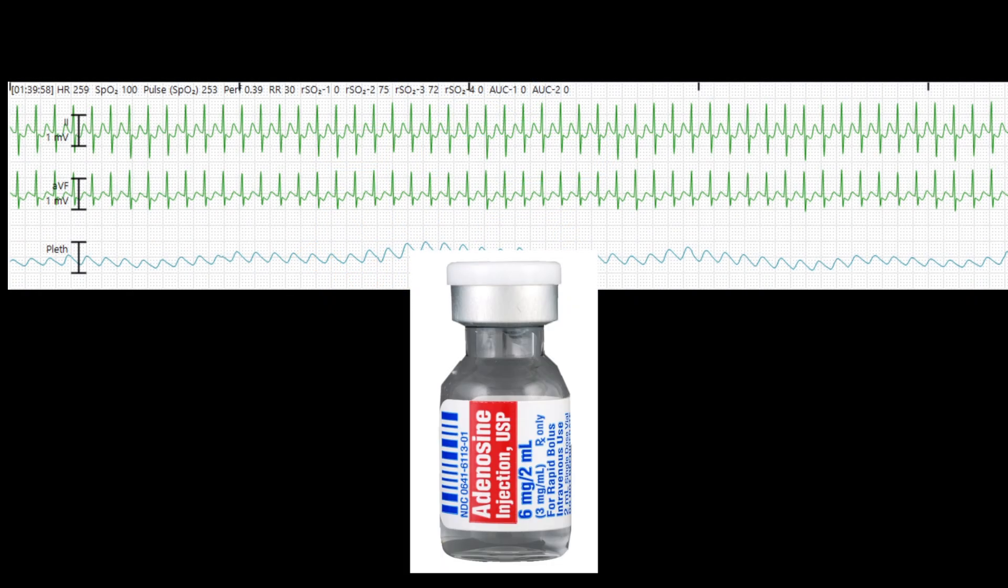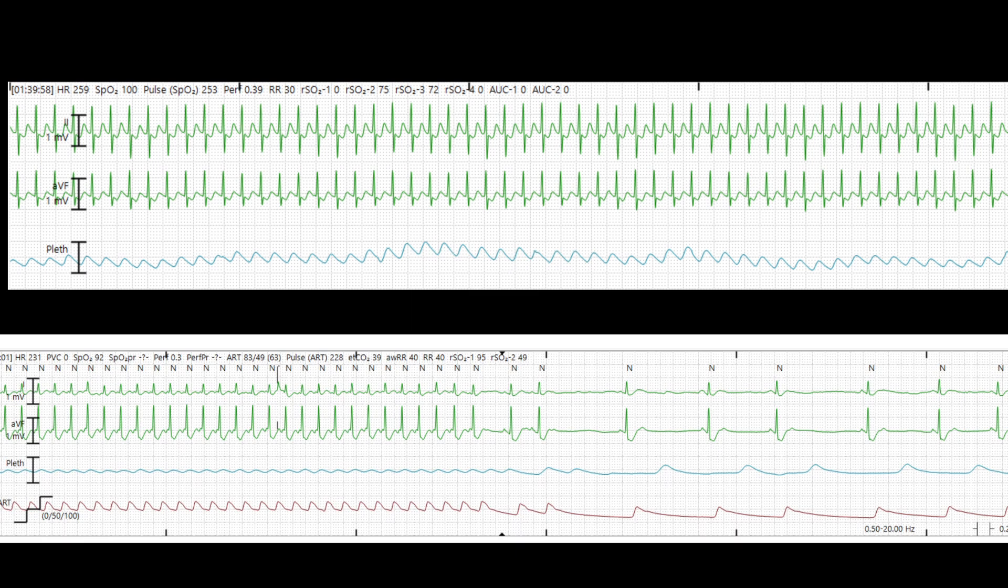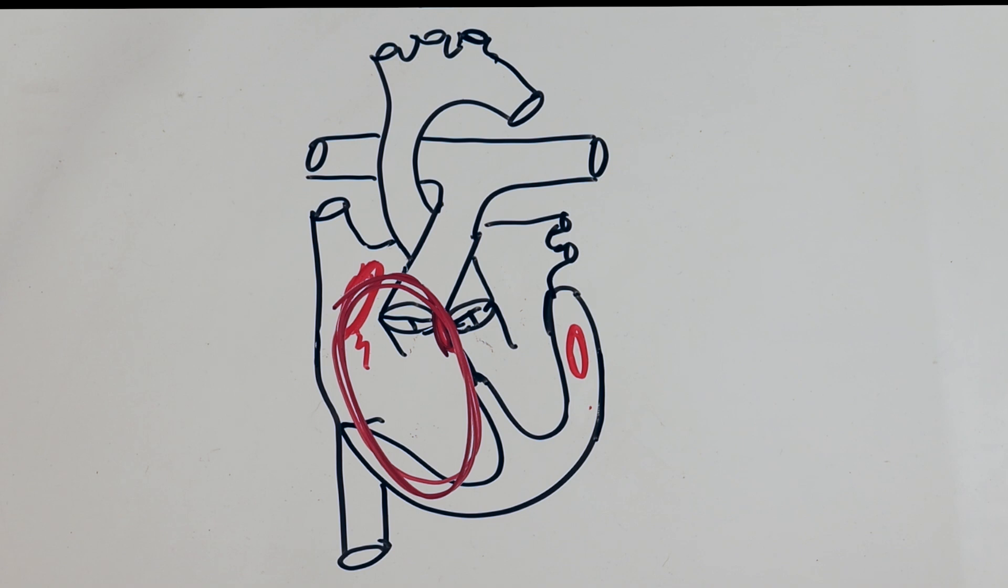We often think of using adenosine to break SVT. However, if you have pacing wires, rapid atrial pacing is faster than drawing up a medication and doesn't give the patient that sense of impending doom when their heart briefly stops when the adenosine blocks the AV node.